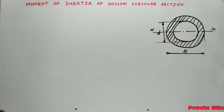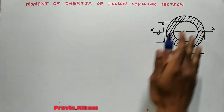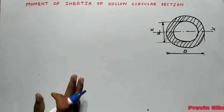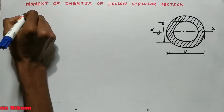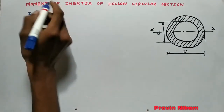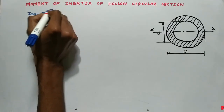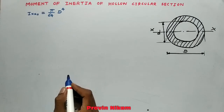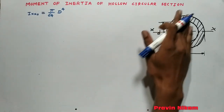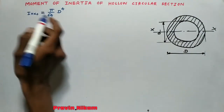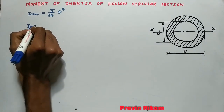Let us see how to find out the moment of inertia of a hollow circular section. We know the moment of inertia of a circular section. Forget the inner circle and only consider the big circle — for the big circle, moment of inertia about the centroidal x-axis is equal to π/64 × D⁴.